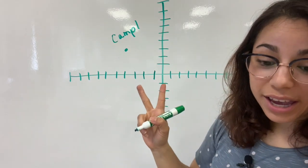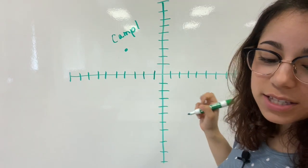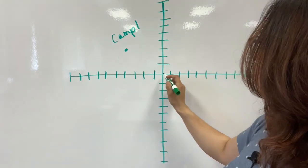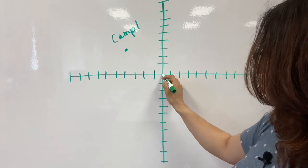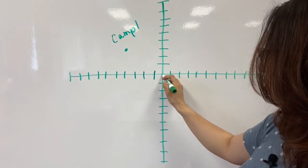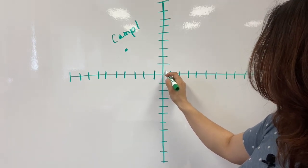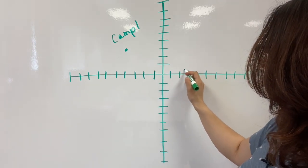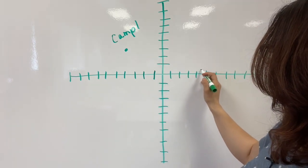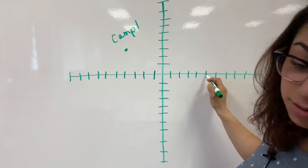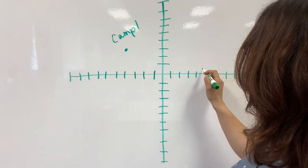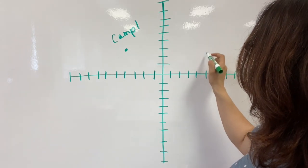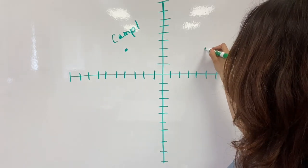The second camp is (5, 3). Start at your origin, (0, 0). Now count positive 5: 1, 2, 3, 4, 5. Then we're going to count positive 3: 1, 2, 3.